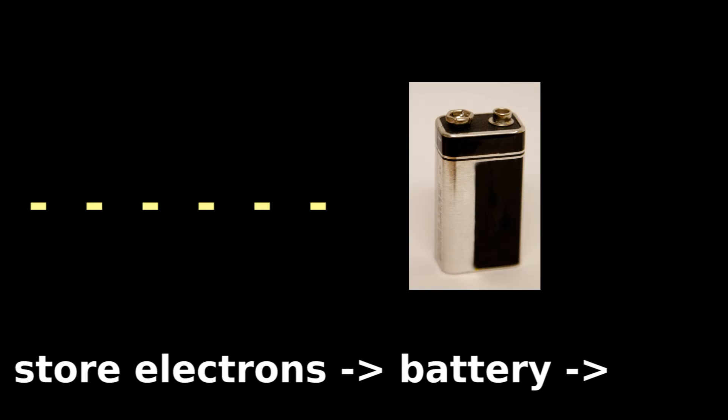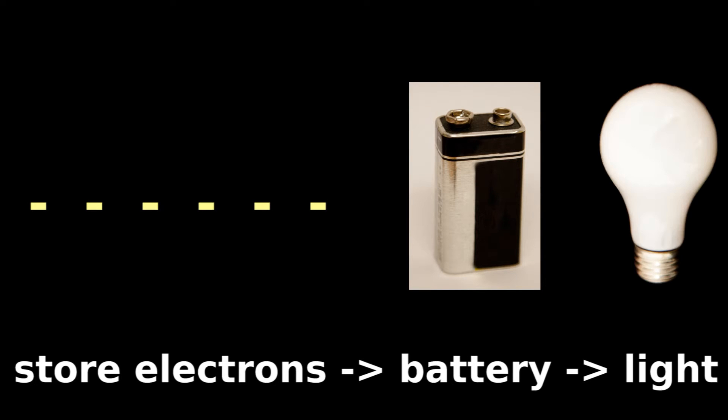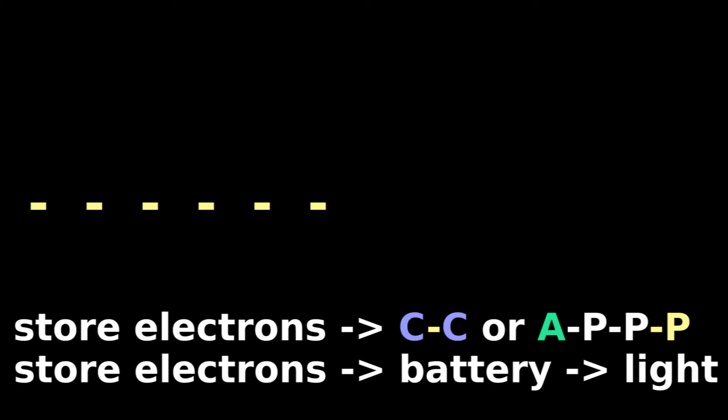You can store electrons in a battery and later use that stored energy for light. You can also store electrons between atoms.